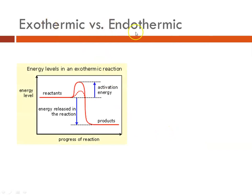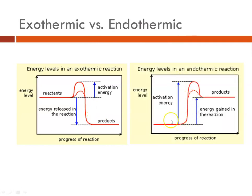We can also talk about whether a reaction is endothermic or exothermic. In the exothermic example, the reactants are higher in energy than the products. There's still an activated complex and an activation energy that must be overcome. The energy released is shown by the blue line, and a dotted line shows that a catalyst lowers the activation energy to facilitate the reaction. In the endothermic example, there is a very high activation energy, the delta H for the reaction is the difference between reactants and products, and again the dotted line shows the catalyzed reaction.